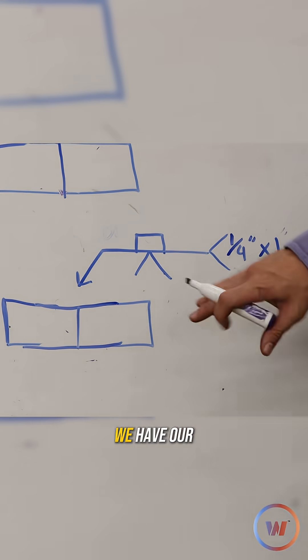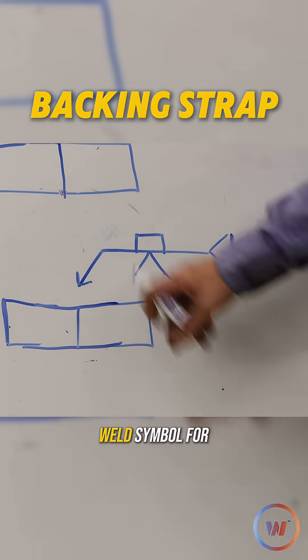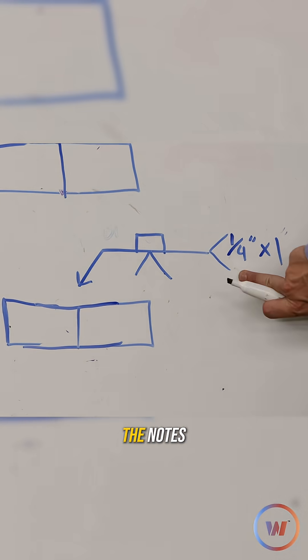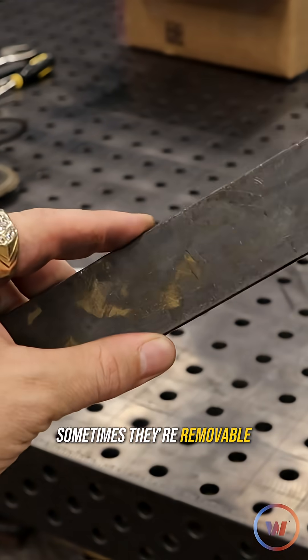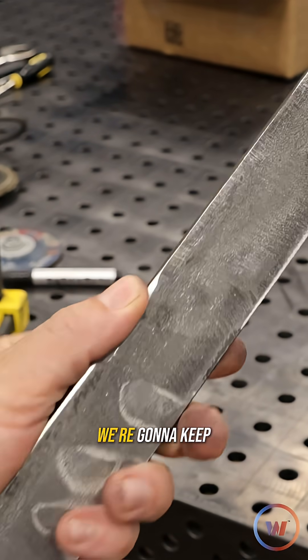We're going to start with this one on the bottom. We have our backing strap. This is the weld symbol for a weld backing and here in the notes you might see the width or thickness of that strap. Sometimes they're removable, sometimes they have to stay there. In this case we're going to keep it there.